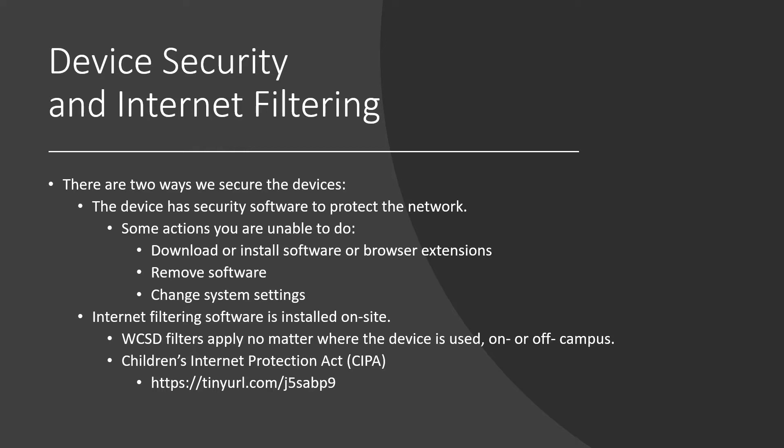In order to protect the devices, security software is installed on the device to protect the network. Due to this software, you will not be able to download or install software or browser extensions, and you will not be able to remove software or change the system settings. For protection from the World Wide Web, internet filtering software is installed on site, but the filters apply no matter where the device is used.